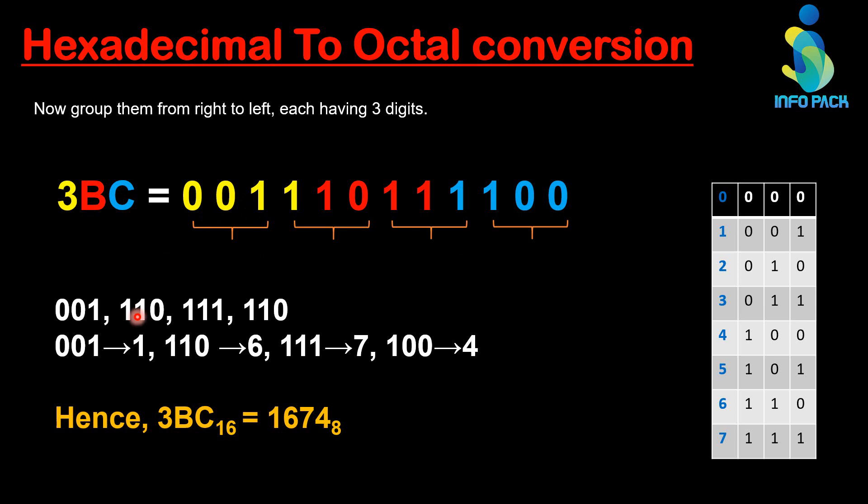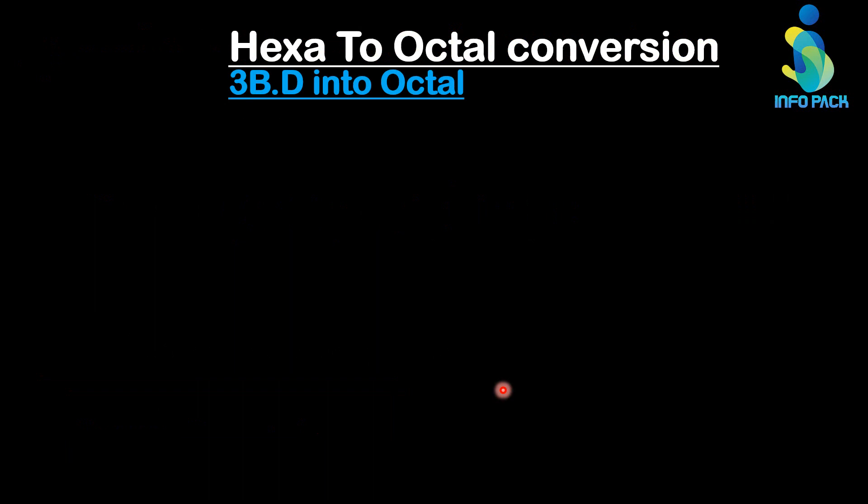001 is equal to 1. Place here 1. And the 110 is equal to 6. This is 7 and this is 4. Write this at same position. The final answer is 1674 in octal form. Now we will convert fractional number into octal.